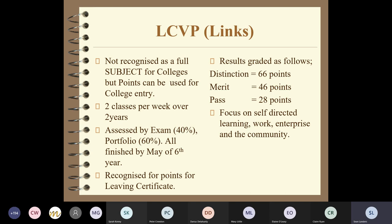The portfolio, effectively a project built throughout fifth and sixth year, accounts for 60% of the marks and is finished by May of sixth year. If you get a distinction - approximately 80-85% - you get 66 points. That can be the difference between a large number of points compared to getting an ordinary level grade in another subject like maths or Irish. The system will automatically substitute your links points if they're higher than your worst sixth subject.